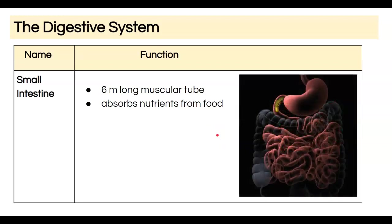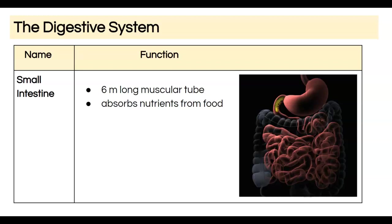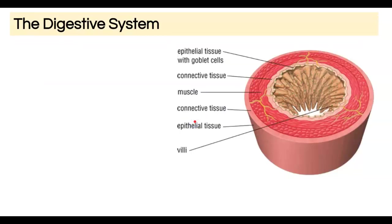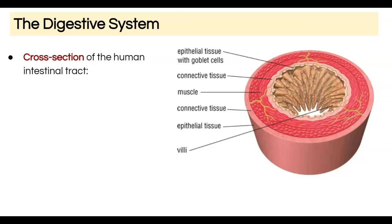Here you can see food moving from the stomach into the small intestine. Next year you'll learn about the subdivisions of the small intestine in greater detail. Now we're looking at a cross section of the human intestinal tract. Food has to be pushed through the small intestine, so it has a fairly thick muscular layer that contracts to allow food to move through it.